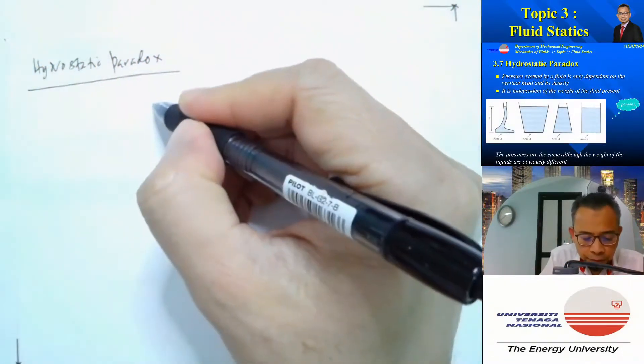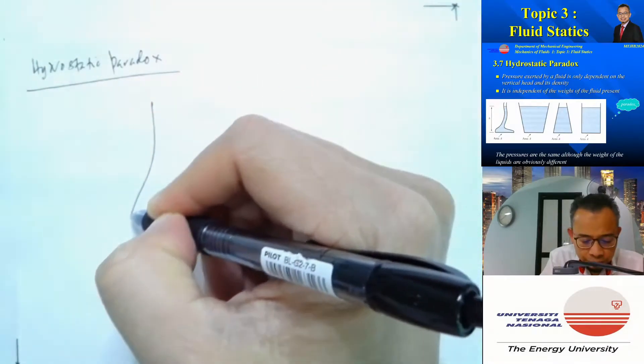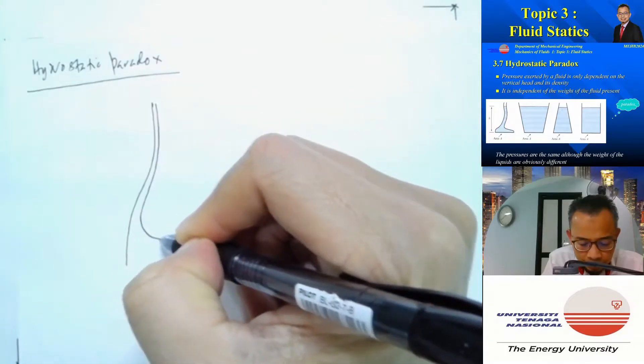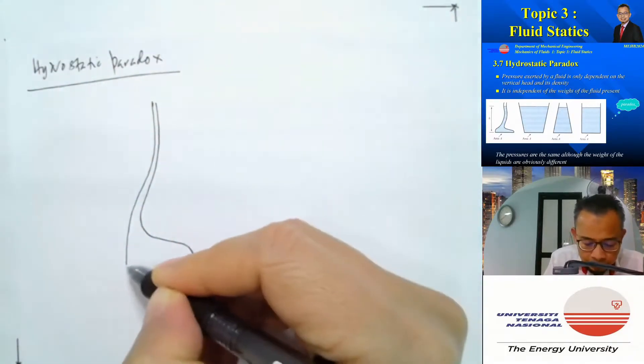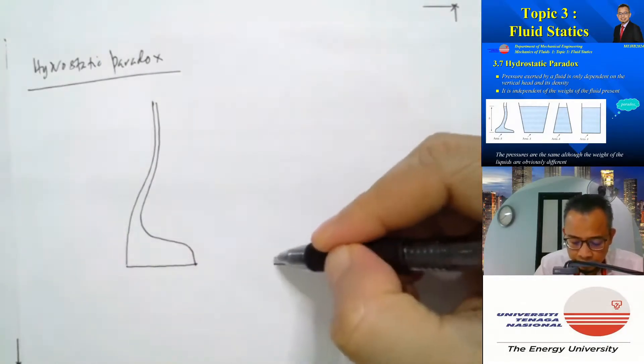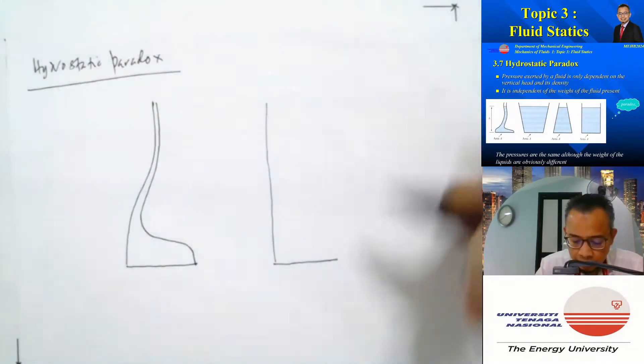So if we consider these two containers, for example, this one is very thin, just like that, but the bottom part has the same area as another container. For example, the water level is very thin.